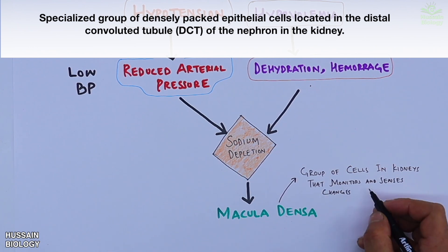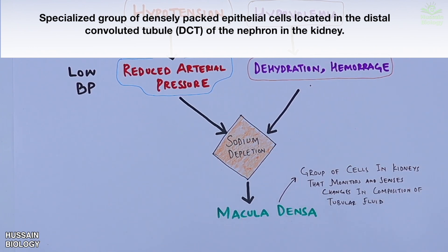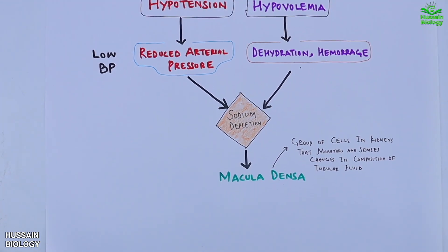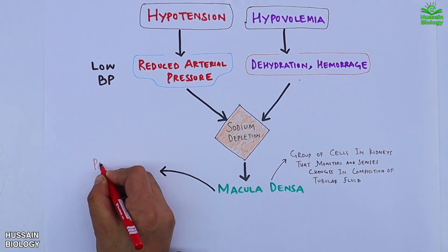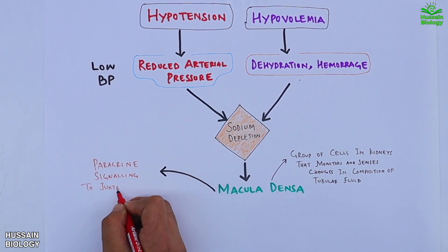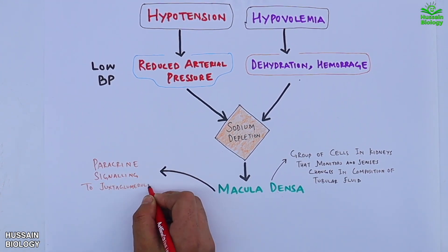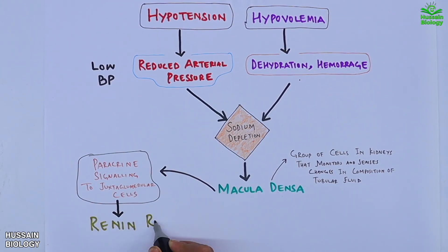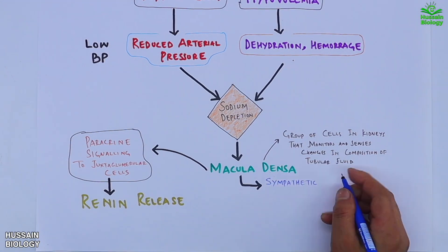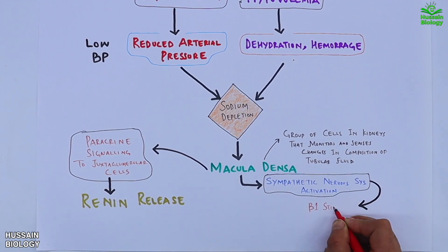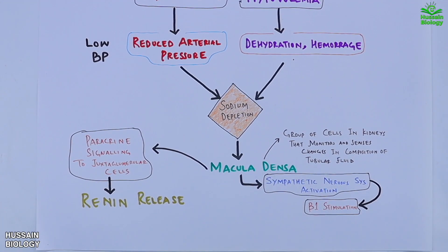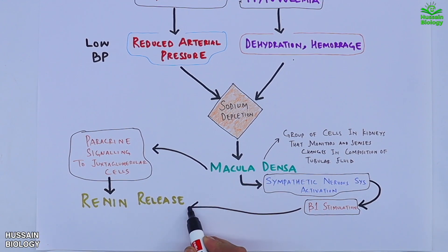This sodium depletion is sensed by the macula densa, a group of cells in the kidneys that monitors and senses changes in the composition of tubular fluid. The macula densa drives paracrine signaling to juxtaglomerular cells, triggering renin release. It also activates the sympathetic nervous system, causing beta-1 stimulation of juxtaglomerular cells, which also leads to renin release.